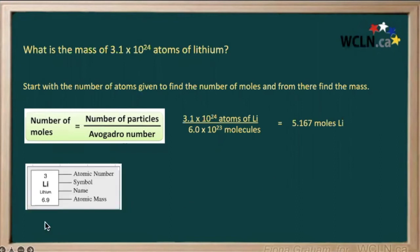Now let's go to the periodic table, and we see that the atomic mass of lithium is 6.9. So that means 6.9 grams per mole, and we have 5.167 moles. We will multiply this amount of moles by this conversion factor. Our mole units will cancel out, and basically we have 5.167 times 6.9, giving us 36 grams of lithium.